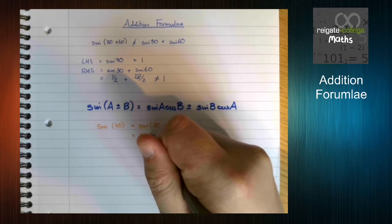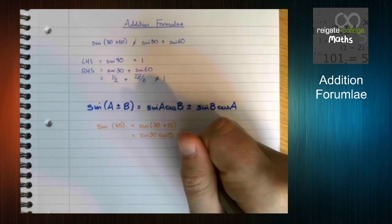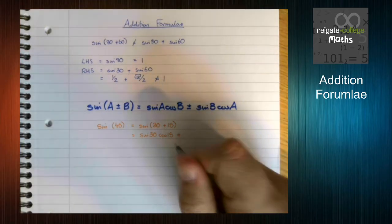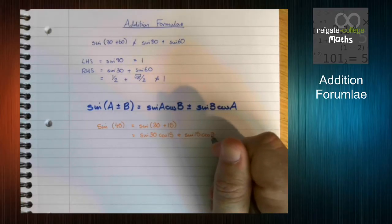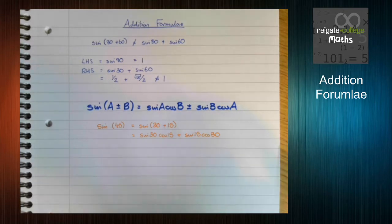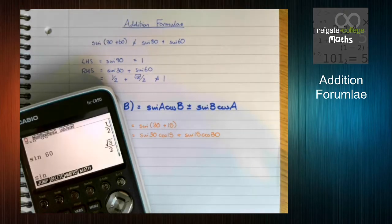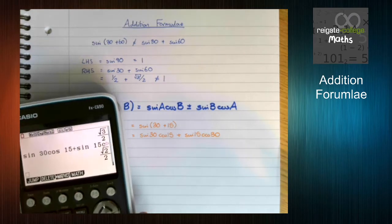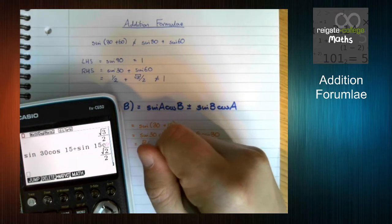So this is going to be equal to sine 30 cos 15 plus, because this is a plus here, sine 15 cos 30. Now we know that this is going to be root 2 over 2, so let's just test it on our calculators with this side. Sine 30 cos 15 plus sine 15 cos 30 is indeed root 2 over 2. So this has confirmed what we wanted.